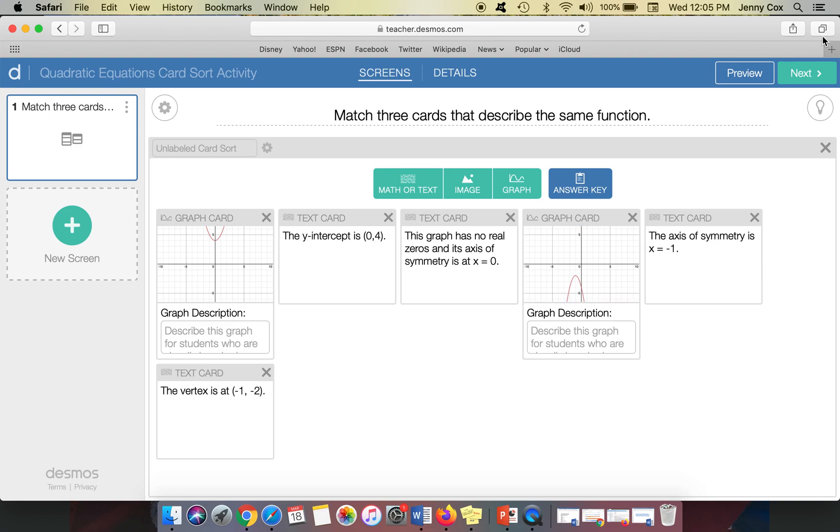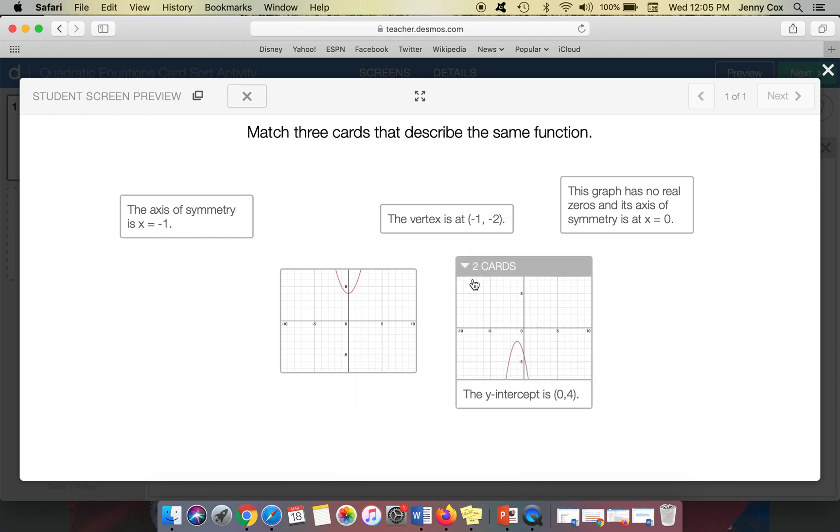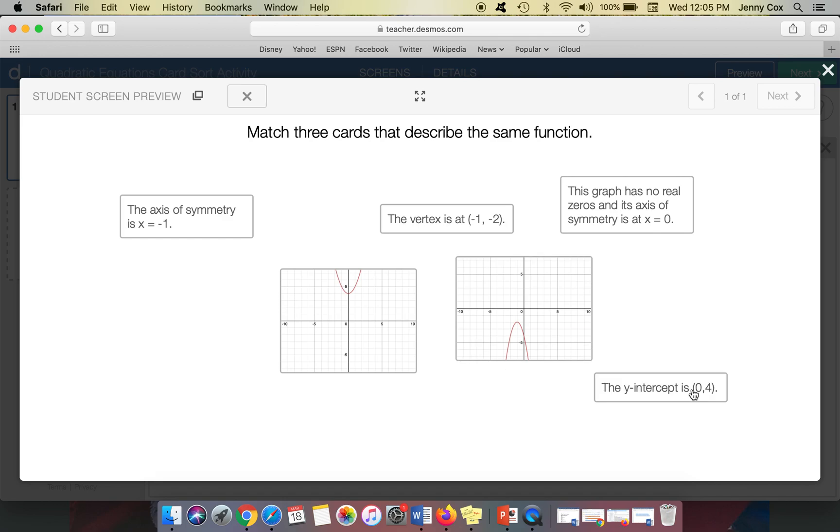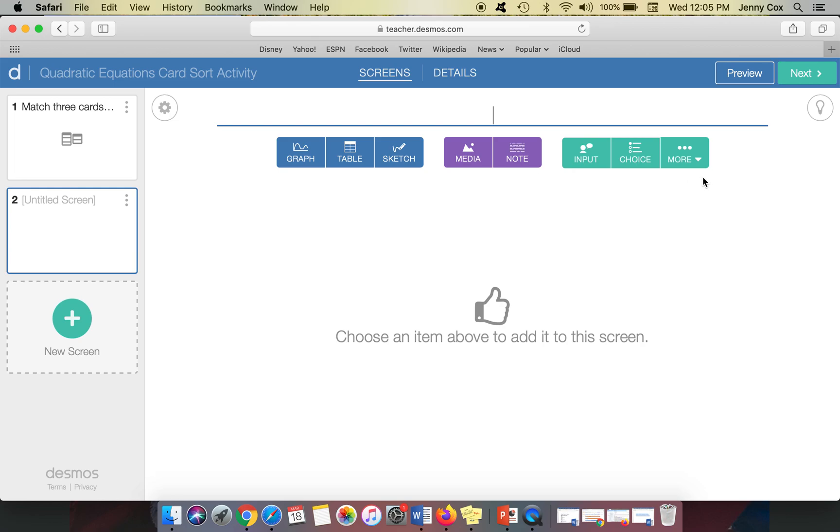So sometimes you accidentally link things that shouldn't be linked. So if I put this here and I was like, Oh no, those ones matched up and I didn't mean that, they can still separate them. No big deal. But when you have like 24 cards on one big screen, that happens more often.